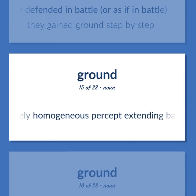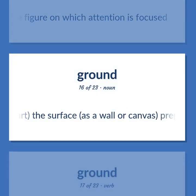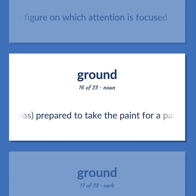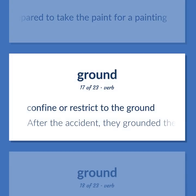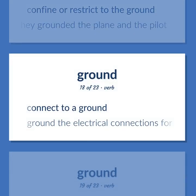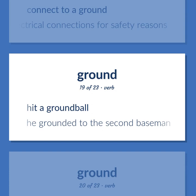A relatively homogeneous percept extending back of the figure on which attention is focused. In art, the surface — as a wall or canvas — prepared to take the paint for a painting. Confine or restrict to the ground — 'After the accident, they grounded the plane and the pilot.' Connect to a ground — 'Ground the electrical connections for safety reasons.' Hit a ground ball — 'He grounded to the second baseman.'